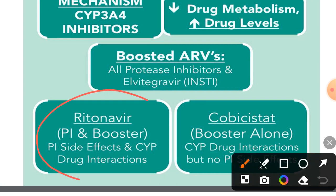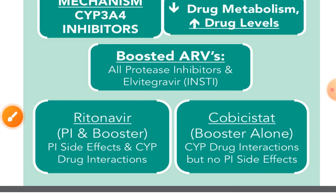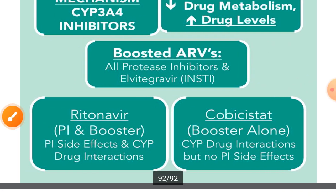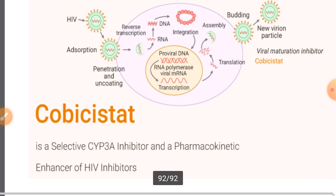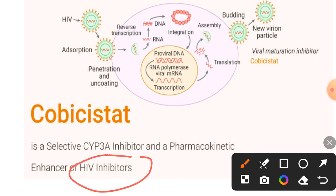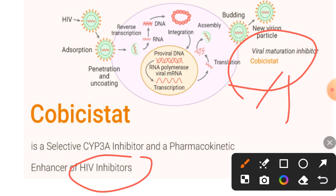Ritonavir is both a protease inhibitor and a booster, so its protease inhibitor side effects also apply. Cobicistat is a booster only — it is not a protease inhibitor — so it will not have those protease inhibitor side effects. Drug interactions can occur because CYP3A4 is inhibited, enhancing the effects of antiviral drugs.